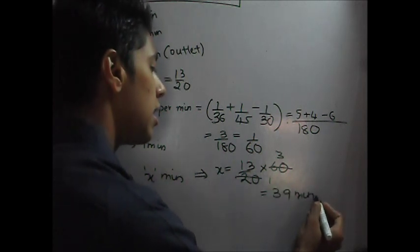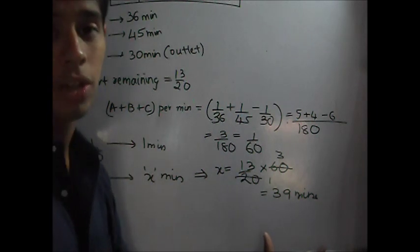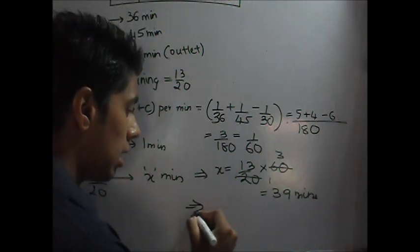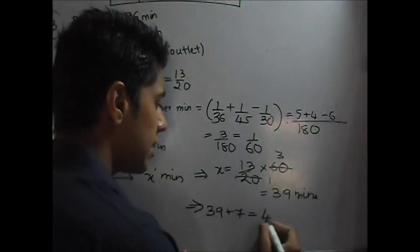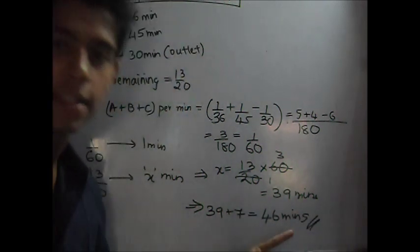Now, here is one place where everybody makes a mistake. 39 will be one of the options. But, it is not the answer. You have to account for the first 7 minutes. So, your actual answer will be 39 plus 7. That is 46 minutes. This is your final answer.